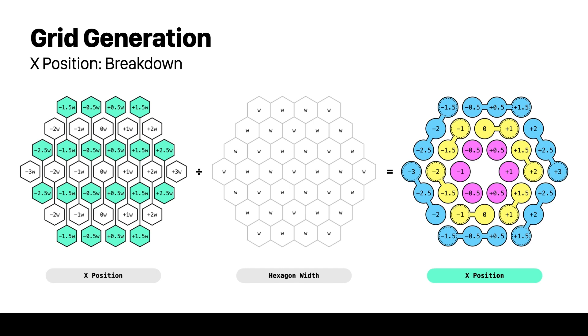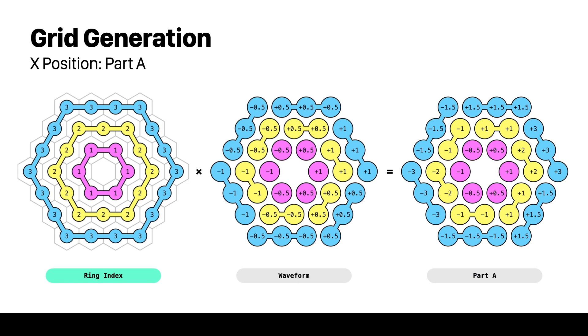In order to achieve this sequence we're going to use the ring index and multiply it with the waveform function. We will need to offset the waveform function because instead of starting with plus 0.5 we need to start with plus 1. This is what we get by multiplying them.